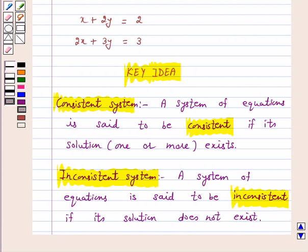Before examining the consistency of the system of equations, let us understand what is the meaning of consistent system. A system of equations is said to be consistent if its solution, one or more, exists. A system of equations is said to be inconsistent if its solution does not exist.